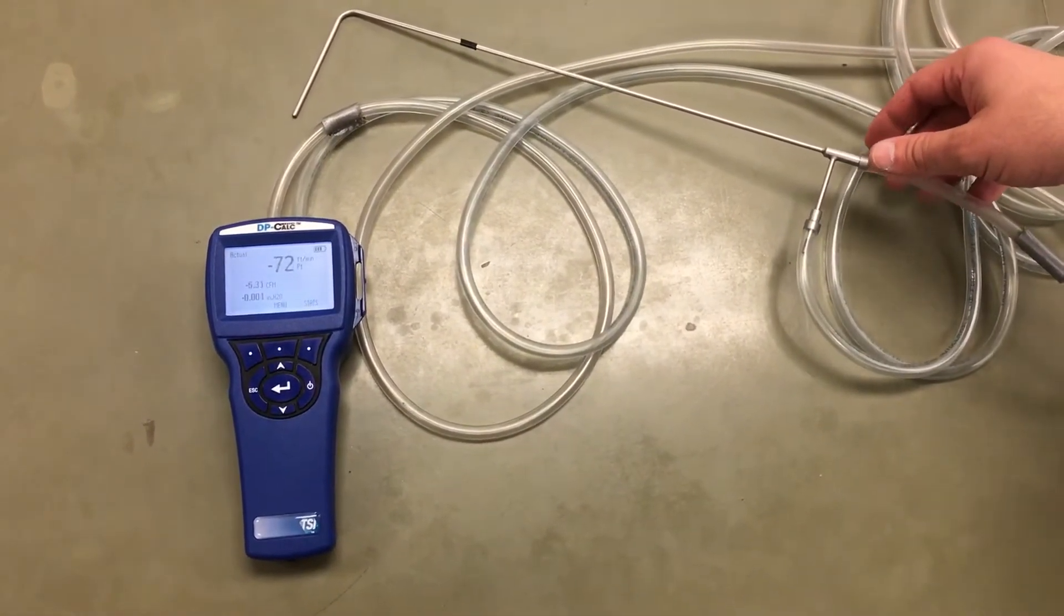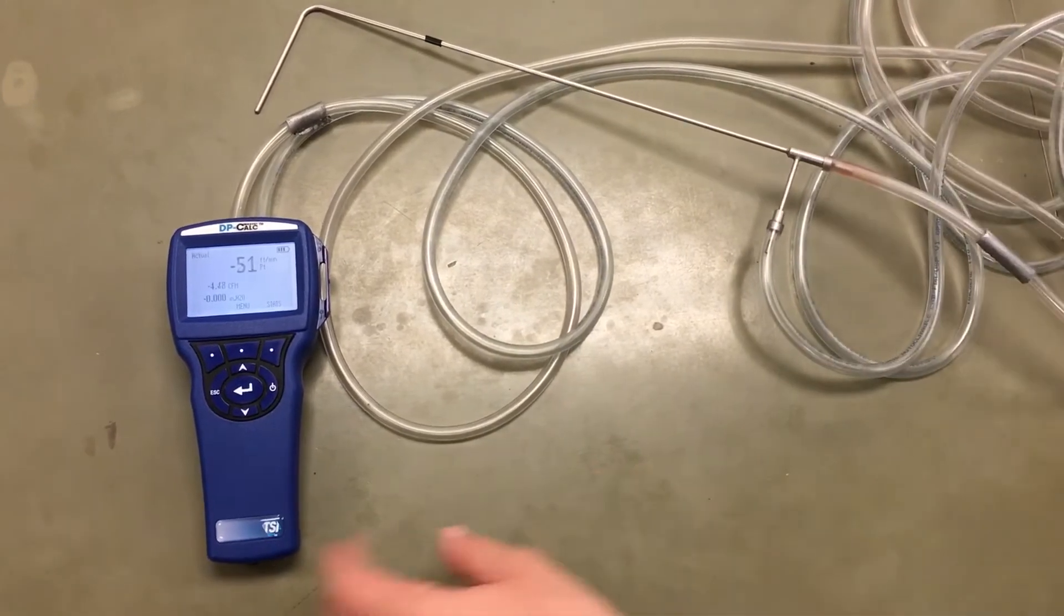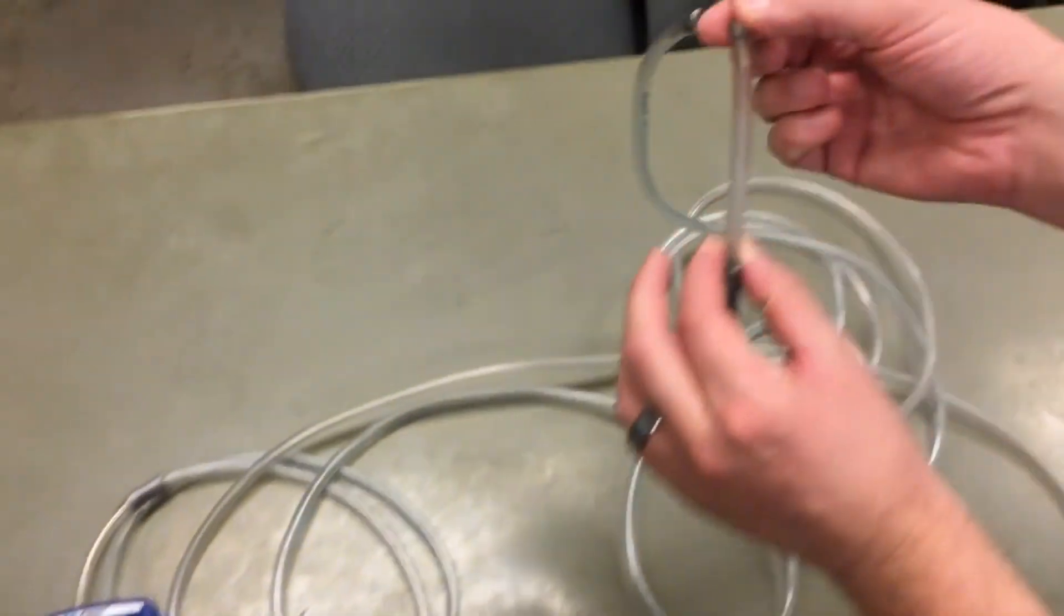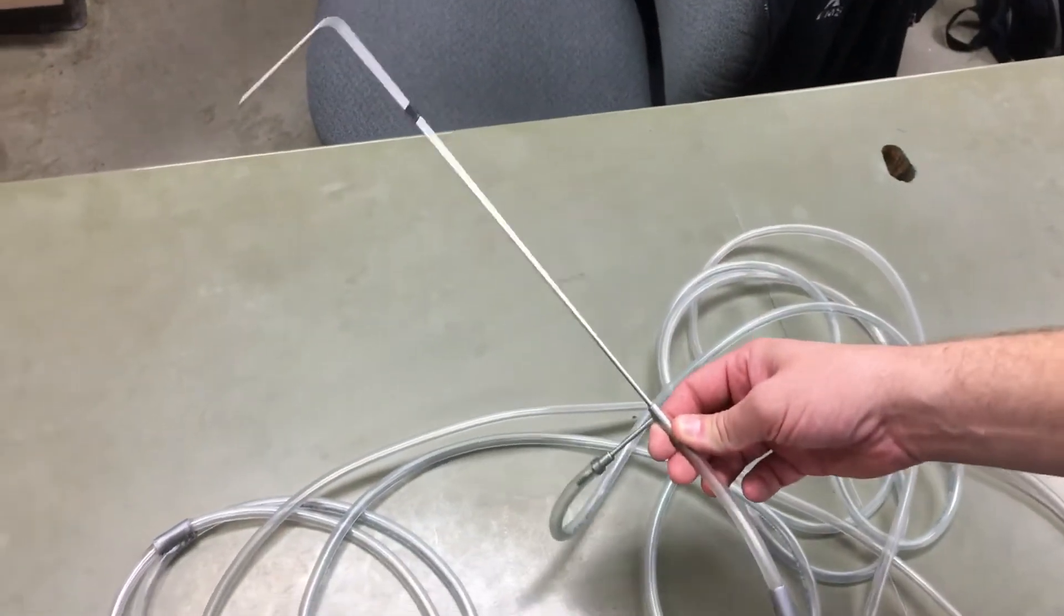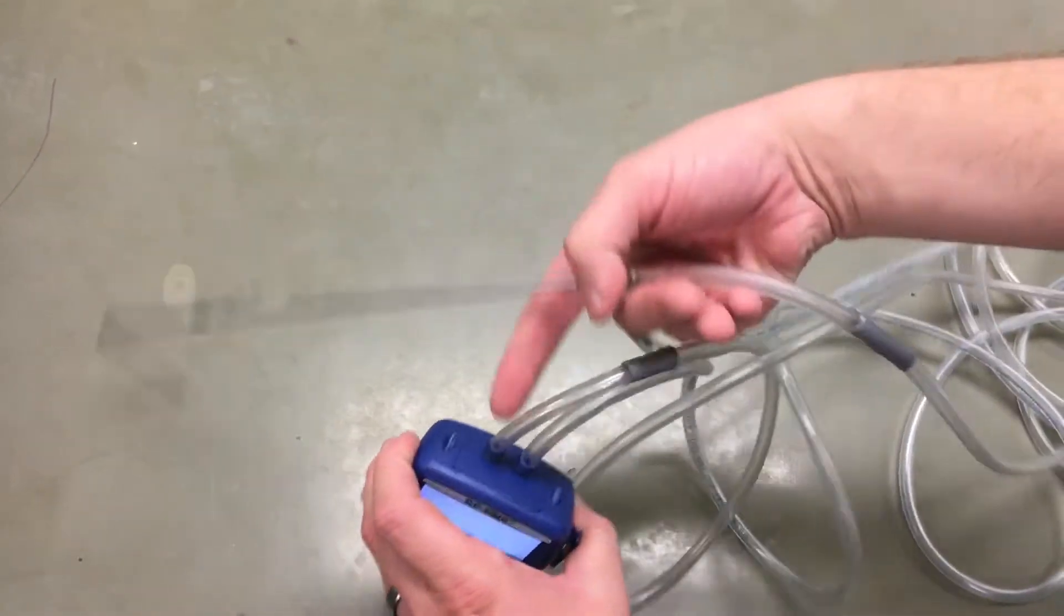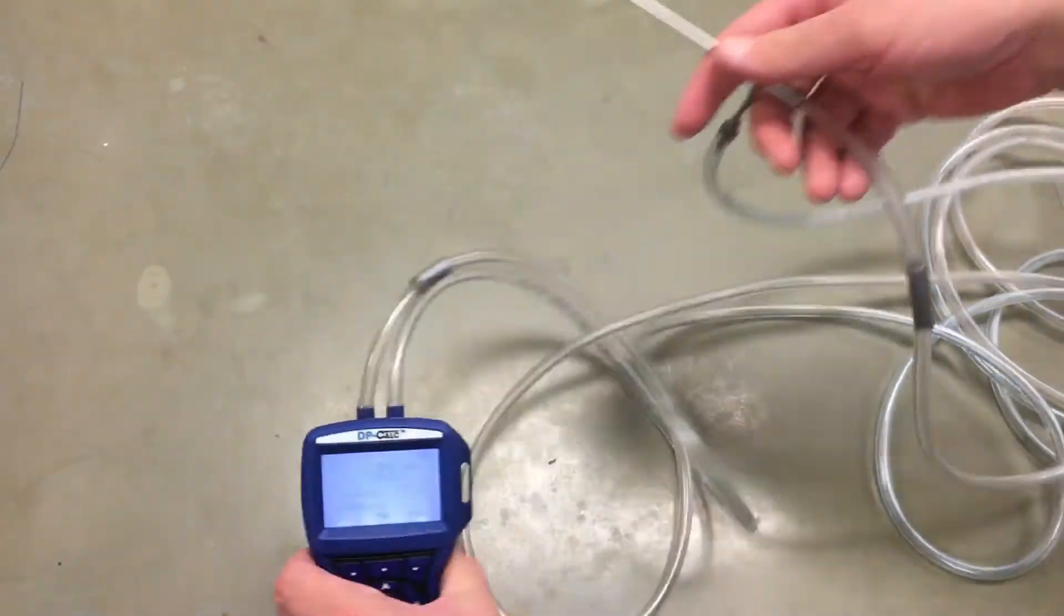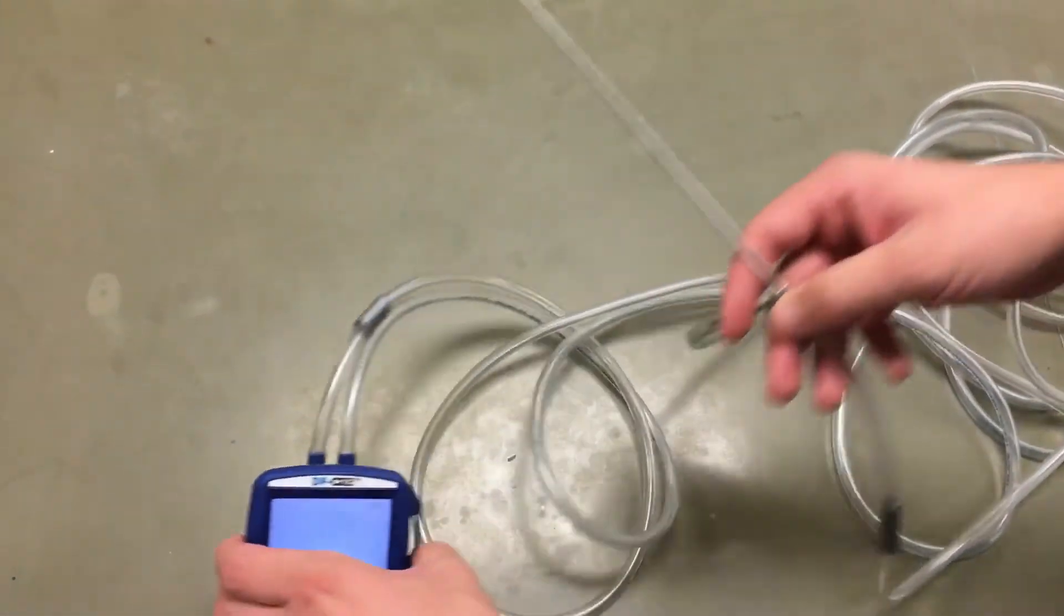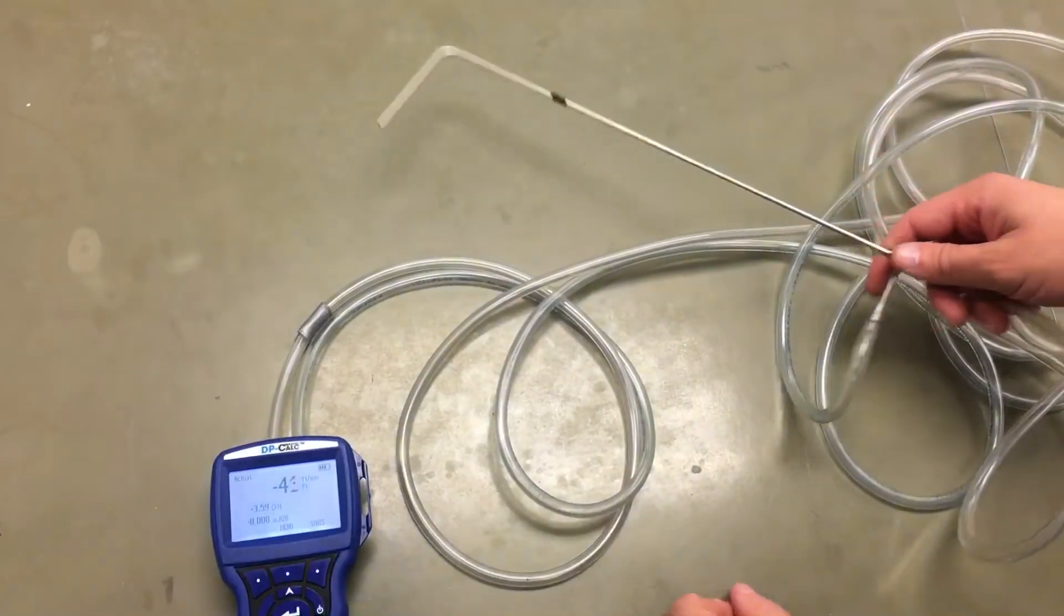We'll also measure the velocity pressure inside a ventilation duct. We've got our pitot tube hooked up, with the velocity pressure line hooked up to the positive port on the meter, and our static pressure line hooked up to the negative port on our meter.